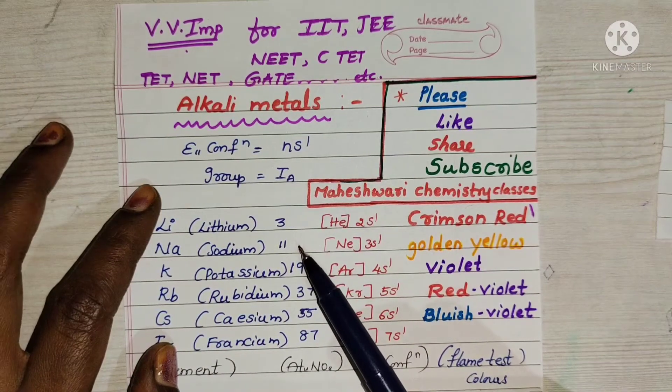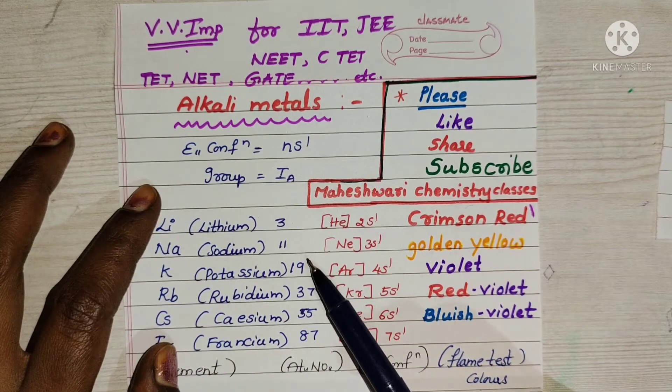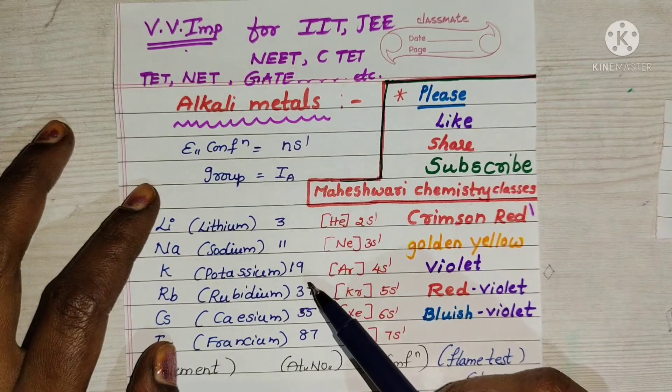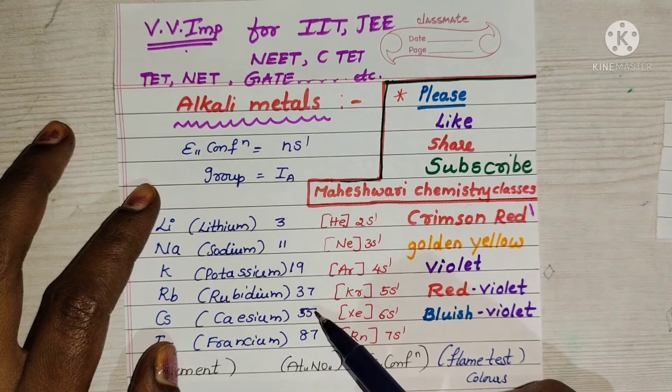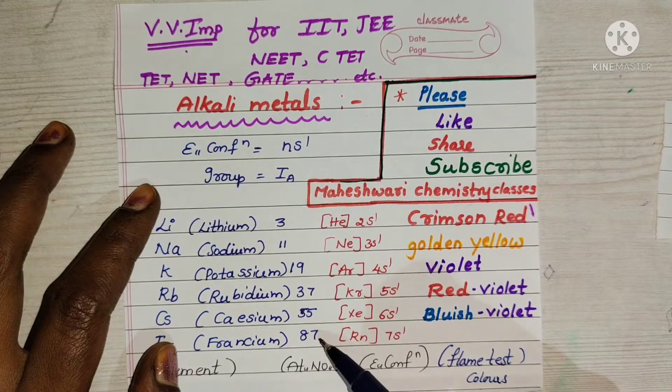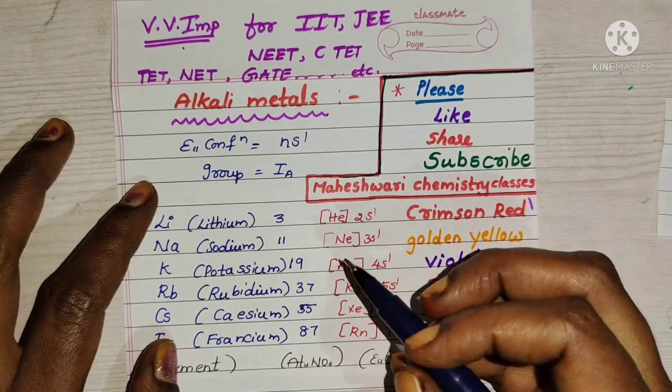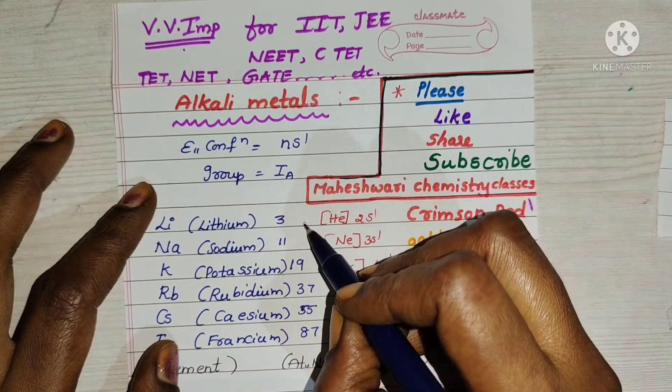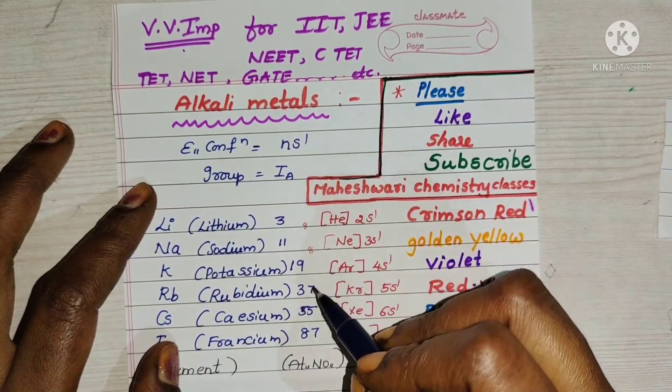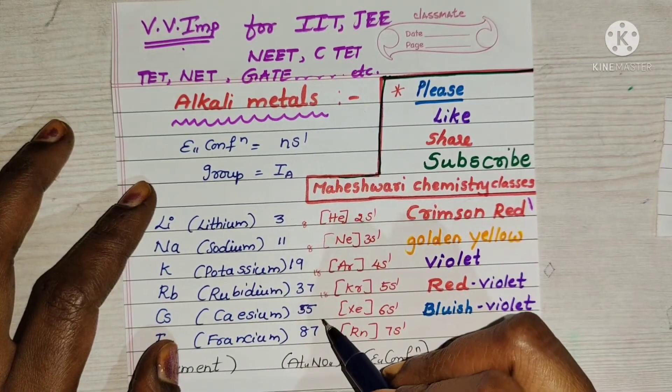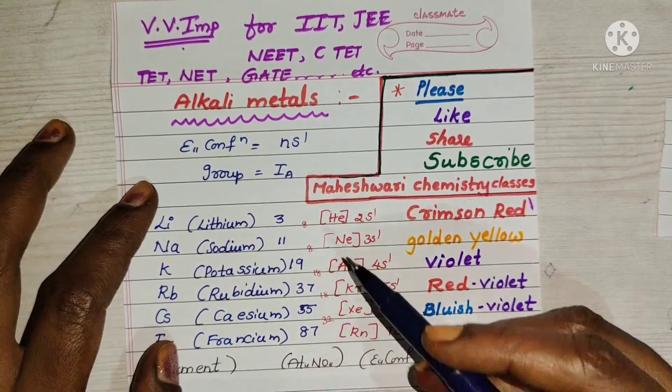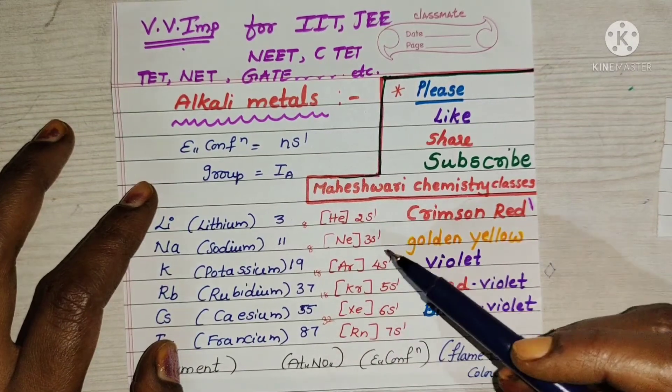Between 11 and 19 is 8, between 19 and 37 difference is 18, between 37 and 55 is 18, between 55 and 87 difference is 32. So simply remember 8, 8, 18, 18, 32. I am writing this for electronic configuration purpose.